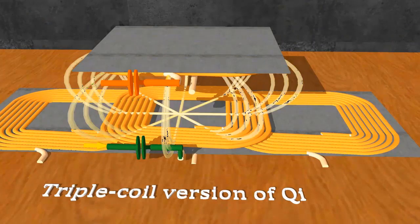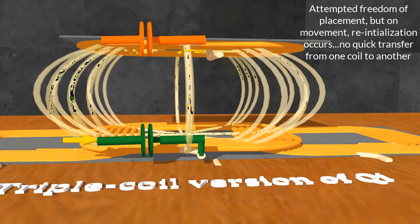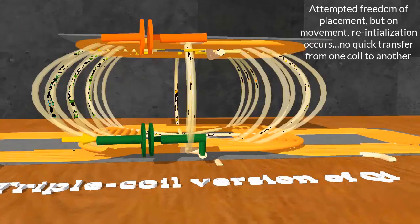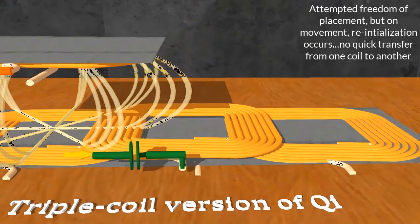This is a version of Qi that actually worked: the triple coil version. But only one coil works at a time on the transmitter, and if you move the receiver, the best coil starts working. It looks smooth.